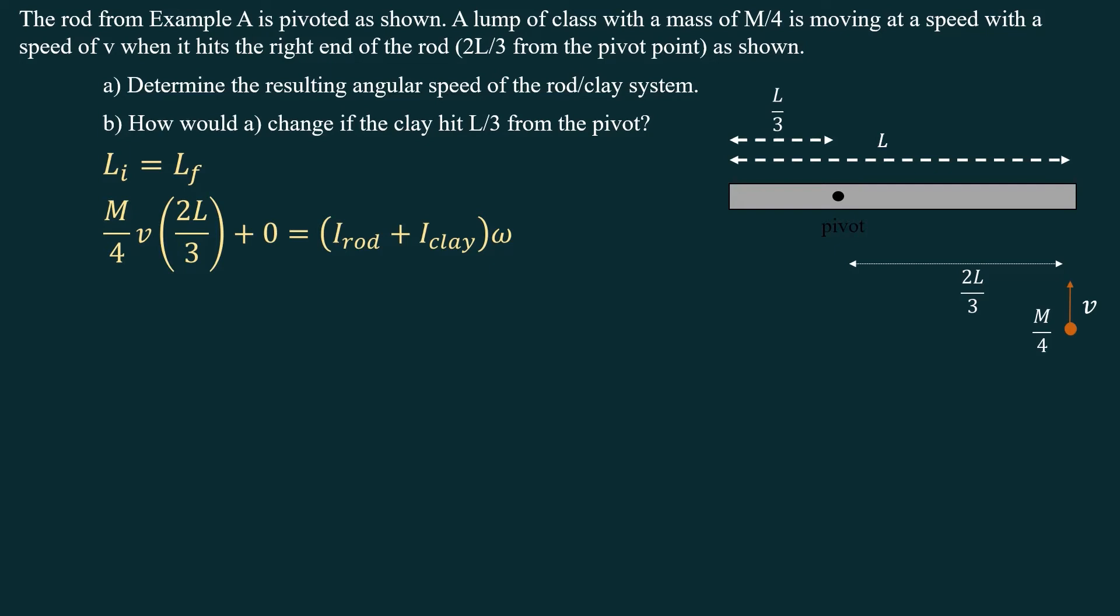So we use conservation of angular momentum, Li equals Lf. And then on the left we have MVR for the clay. It's a point mass, so we have M over 4 times V. Its distance is this distance here, which is 2L over 3, and then plus zero because the rod's initially not moving. And then after the collision we have the rod clay system. So you have to add I of the rod and the clay separately, because they're part of one system, but they have different moment of inertias that combine together, times omega, their combined angular velocity.